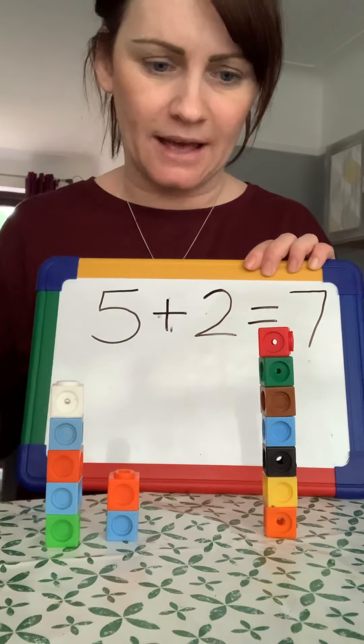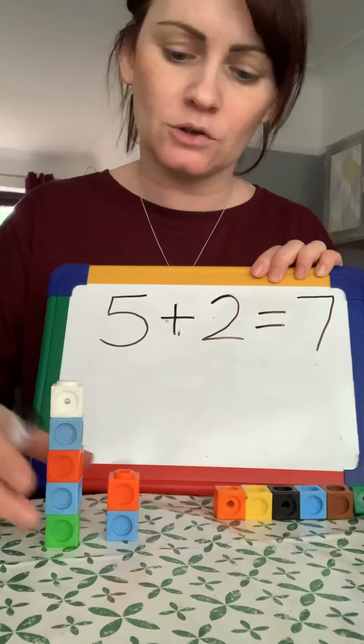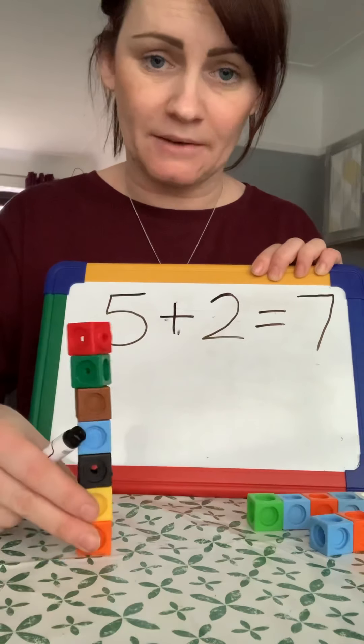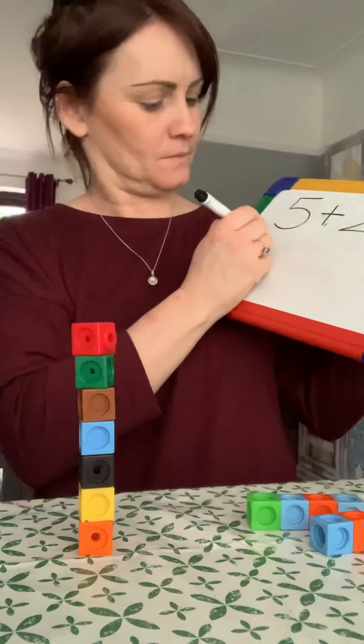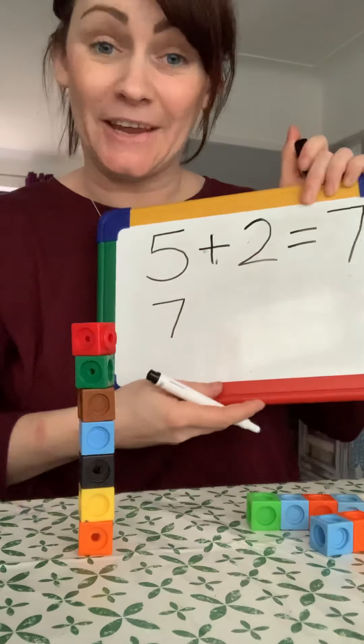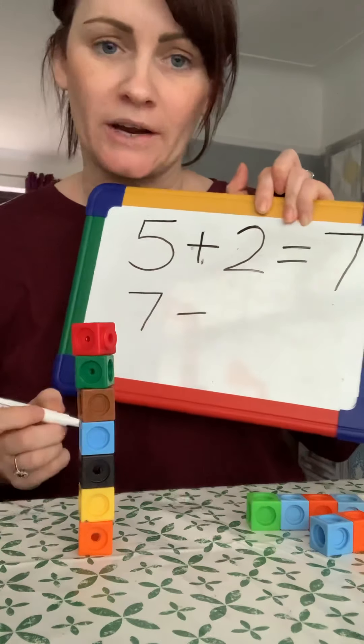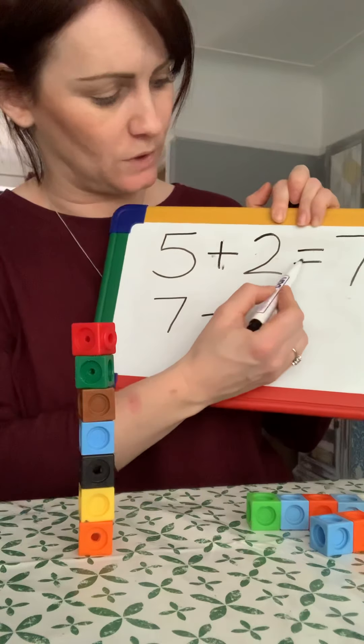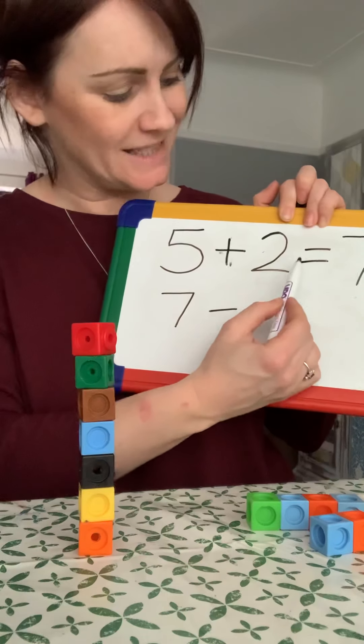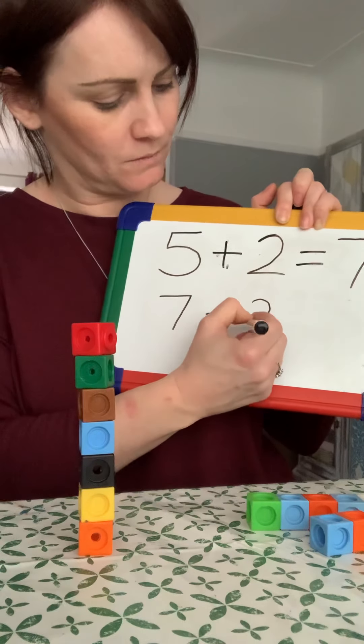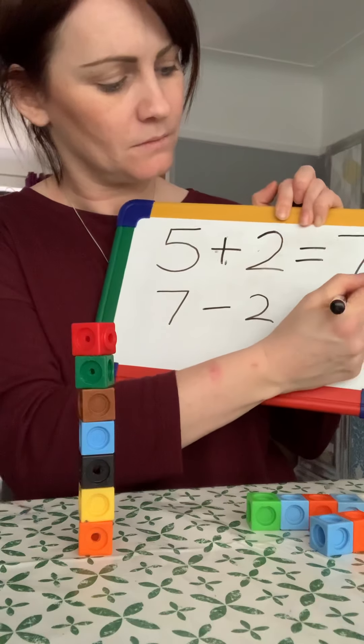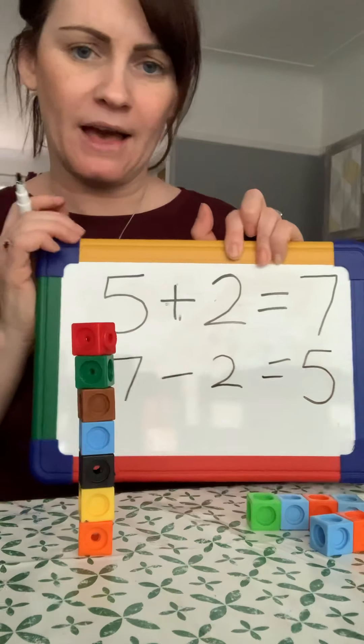5 plus 2 equals 7. So, this time I'm going to start with my 7. And it's an inverse. So, our addition becomes a subtraction. So, 5 plus 2 equals 7. 7 take away 2 equals 5.